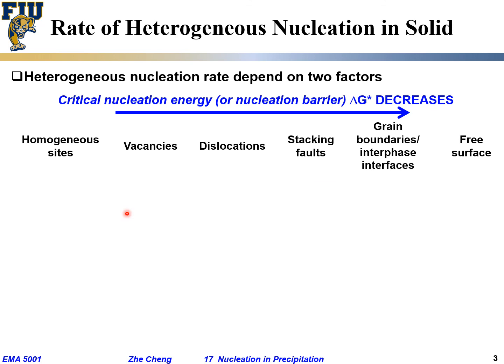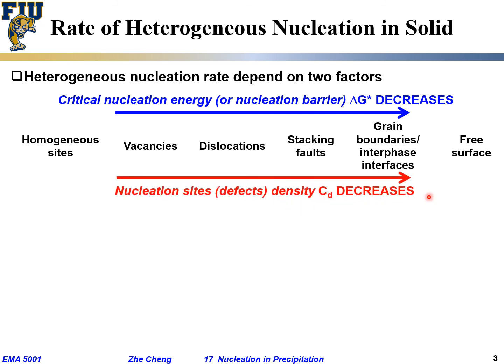Consider the probability of finding a free surface versus a vacancy — which has higher probability? It's actually the vacancy. If you think about how many atoms are located at the very surface versus how many atoms are vacancies, the surface concentration is much lower. So the probability decreases: vacancy concentration is highest, followed by dislocations, then grain boundaries, then free surface.